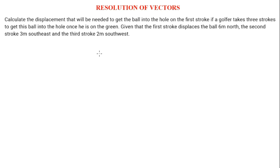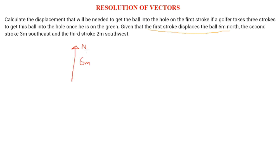To find the displacement needed for this question, we will need to resolve the vectors into its components. To get the ball into the hole, the golfer takes three strokes. The first stroke displaces the ball six meters north — six meters is the magnitude and north is the direction, making it a vector quantity. Now let's consider the four cardinal points: north, south, east, and west.